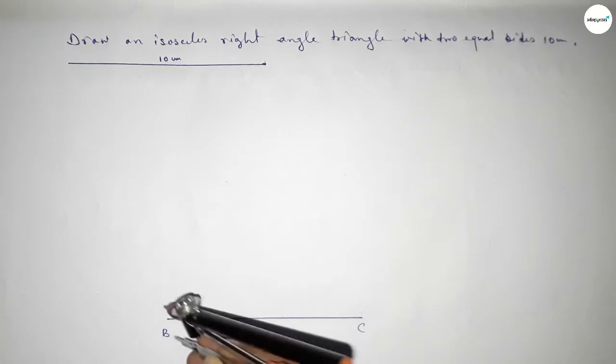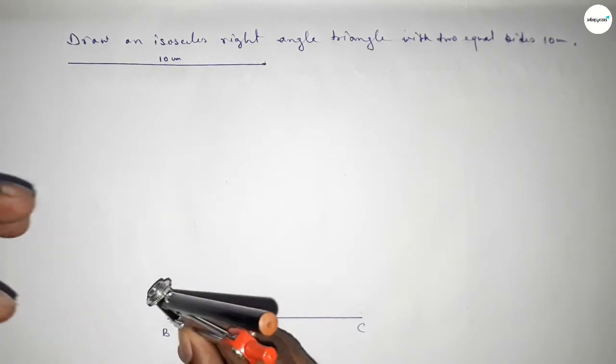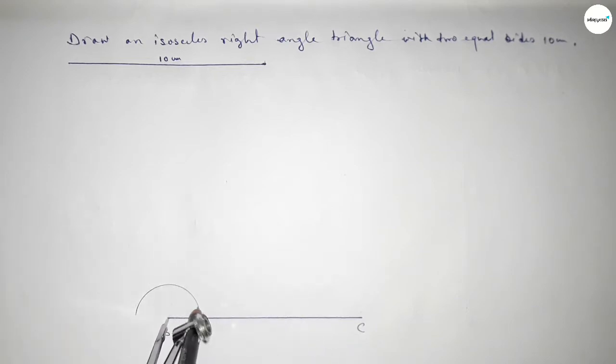Now we have to draw a 90 degree angle on point B. Putting the compass on point B, taking any length and drawing an arc.